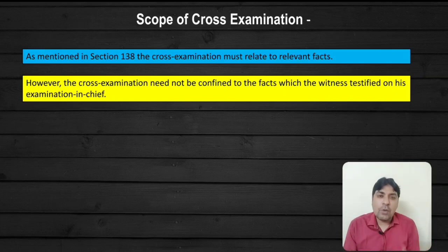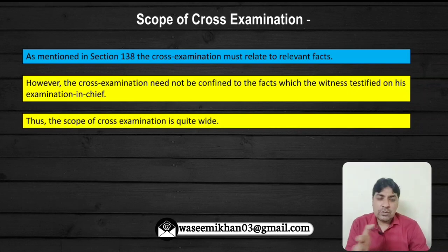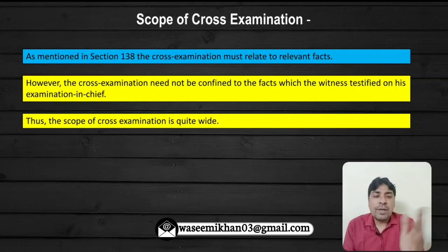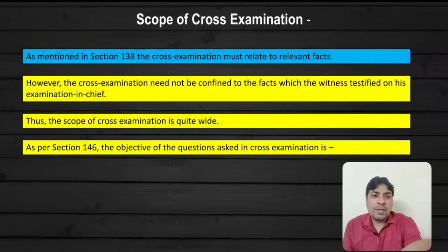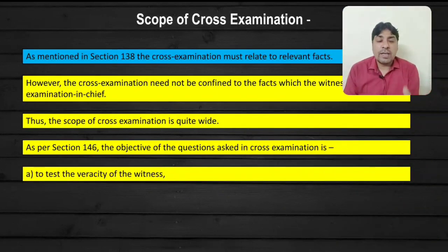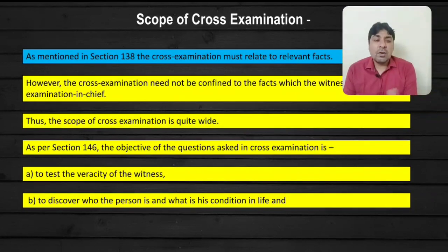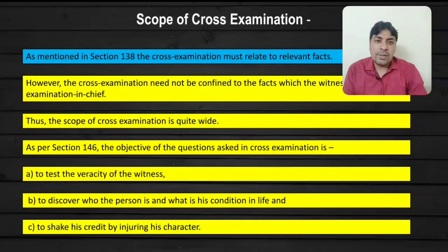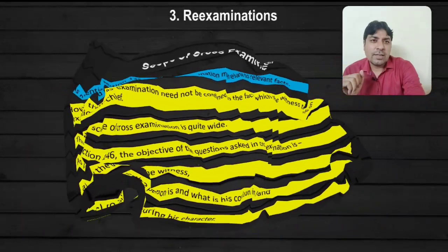Thus the scope of cross-examination is quite wide compared to the scope of examination in chief. As per Section 146, the objective of the questions asked in cross-examination is: to test the veracity of the witness — witness की सच्चाई जानना; to discover who the person is and what is his condition in life — कौन ये person है और इसकी life में condition क्या है; and to shake his credit by injuring his character — उसके character को injure करके उसकी credit को shake किया जा सकता है।